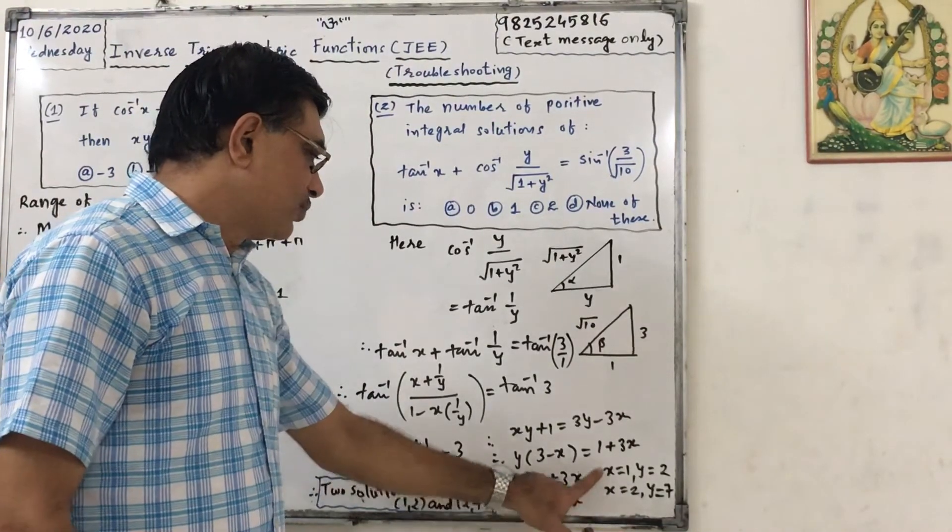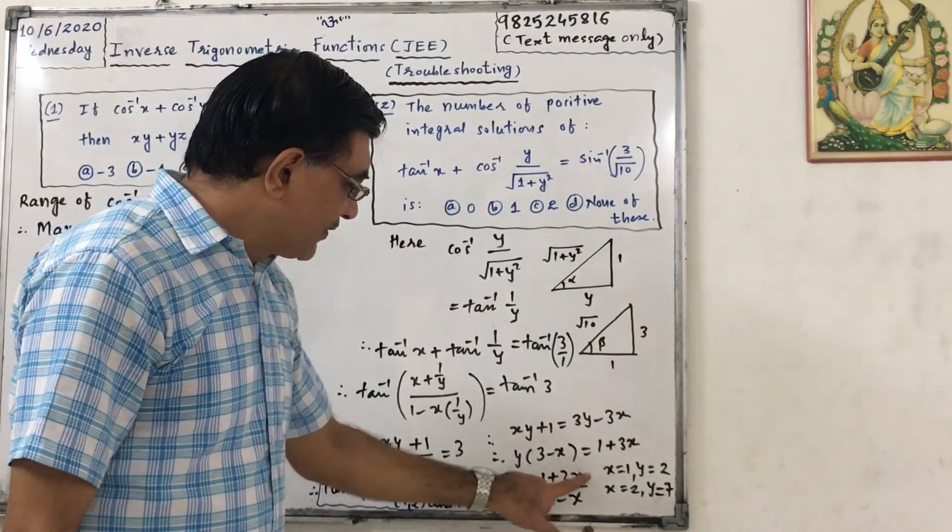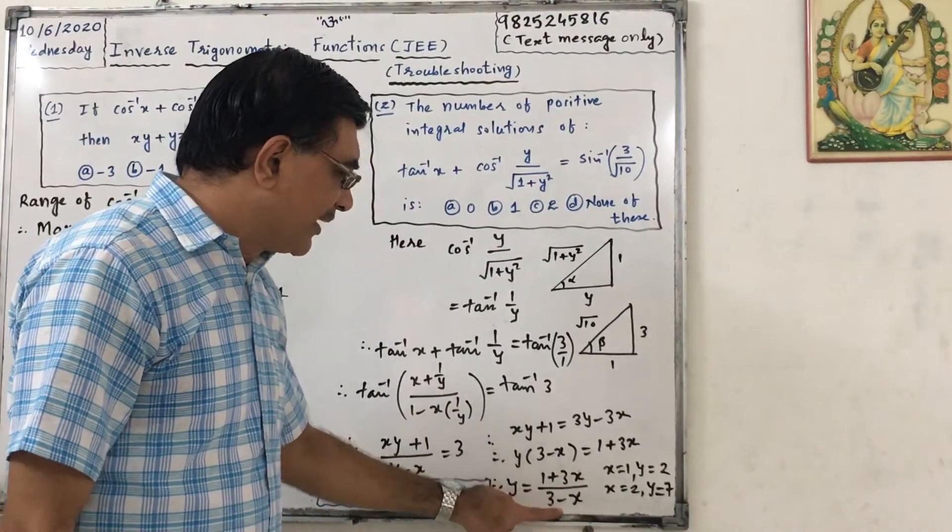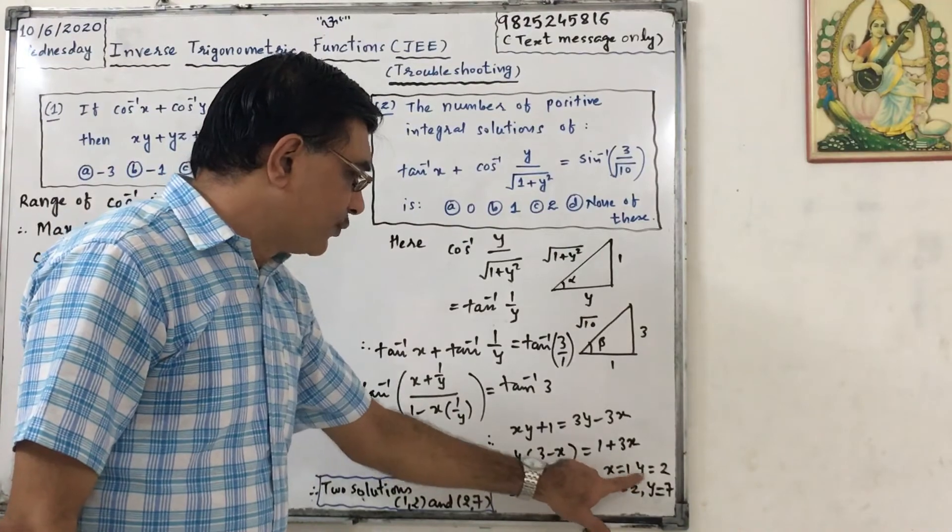So 1 plus 3 upon 3 minus 1, that is 2, so 4 by 2, that is, if x equals to 1, y equals to 2.